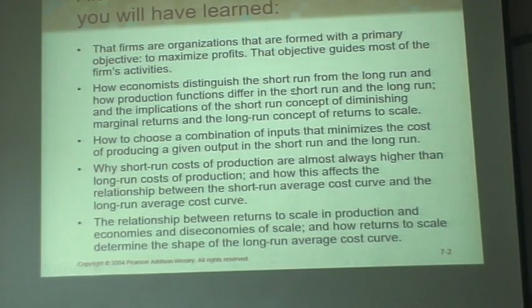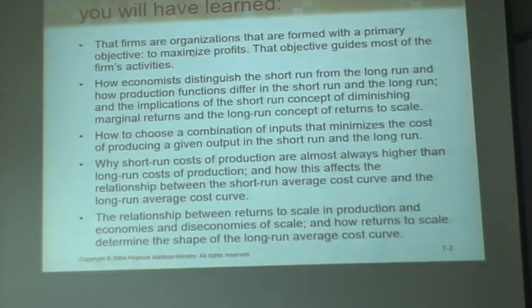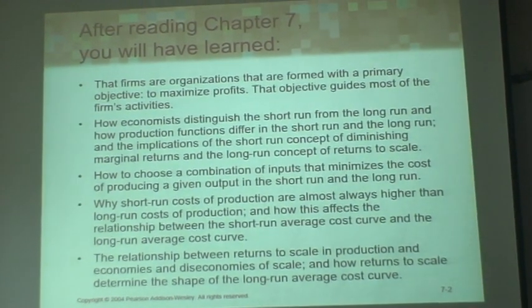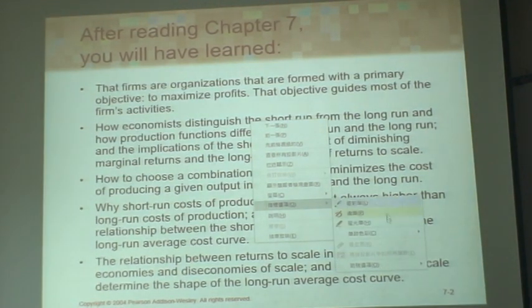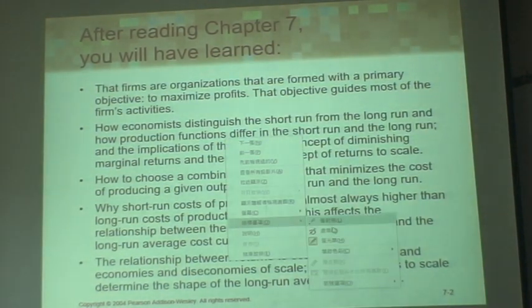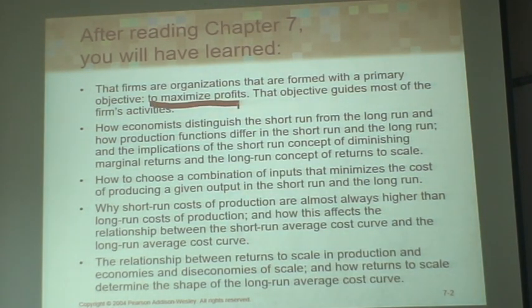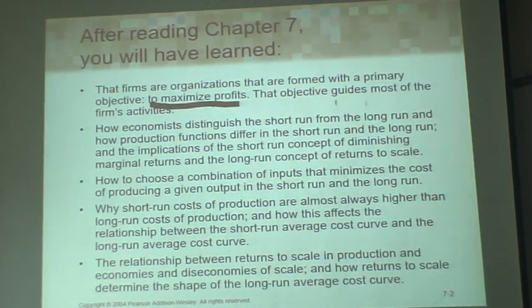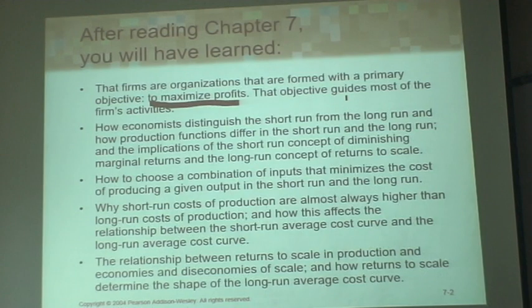Let's look at the PPT. The firms are organizations that are formed with the primary objective. So what's the objective for the firm, for the boss? Make money, right? So maximize profits. And how to maximize profit? You have to produce goods. You have to get organized and get a lot of people, employees, and get a lot of factors of production.